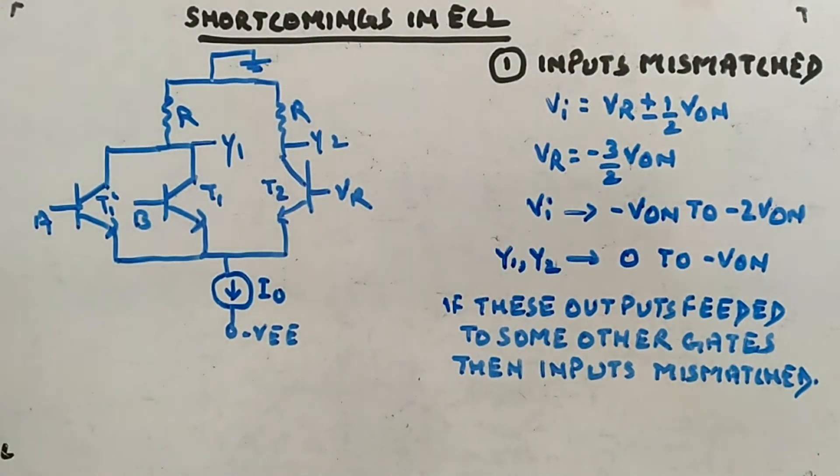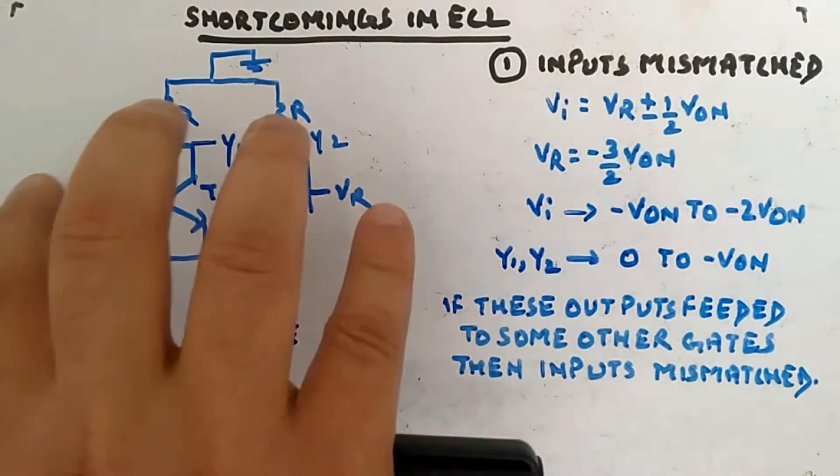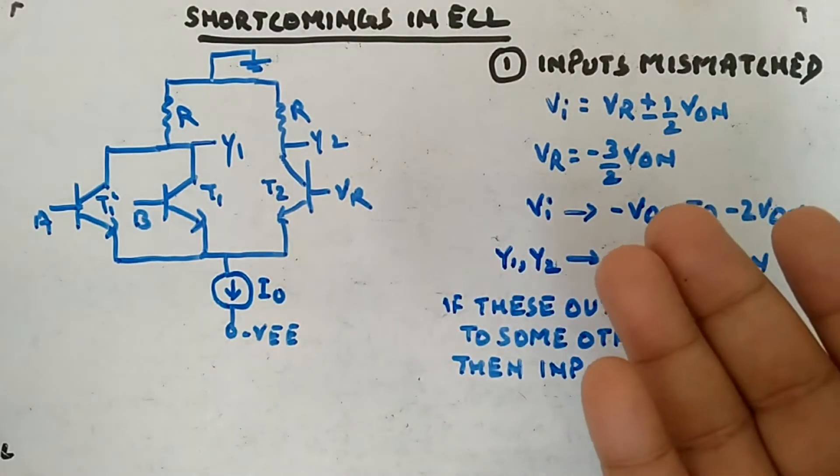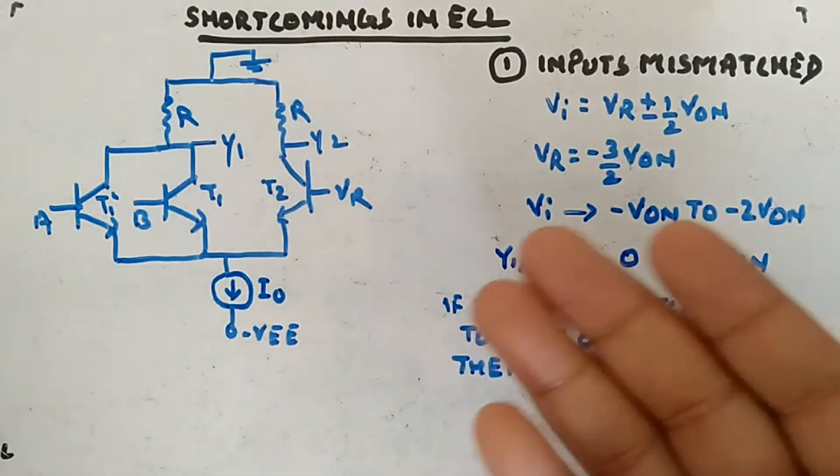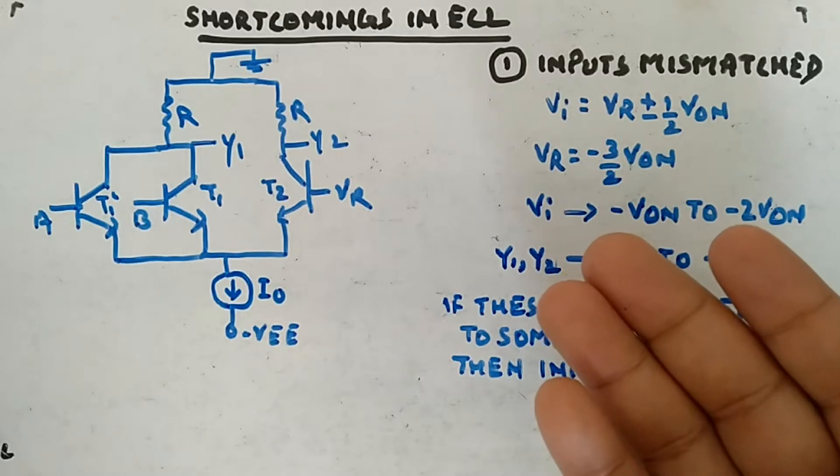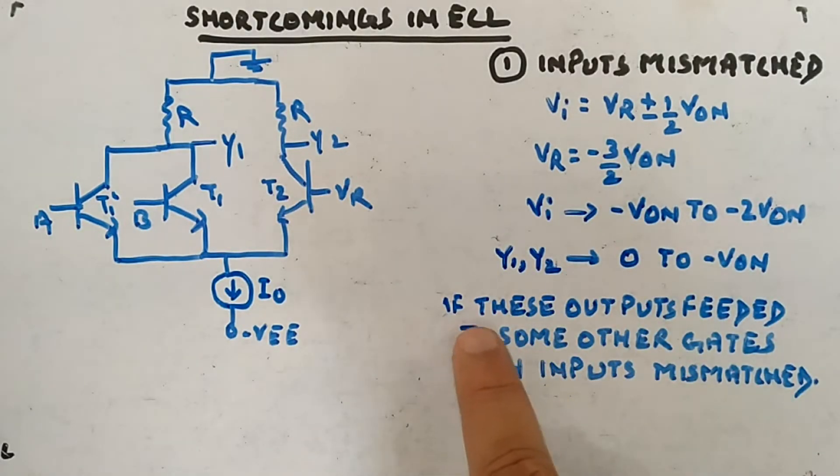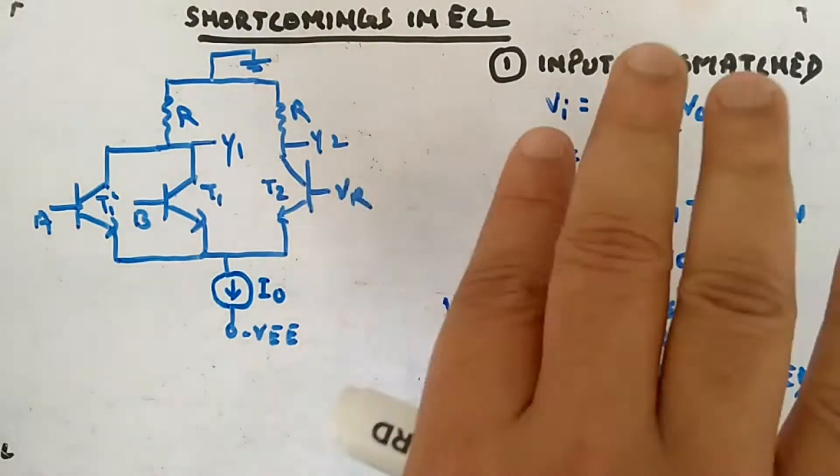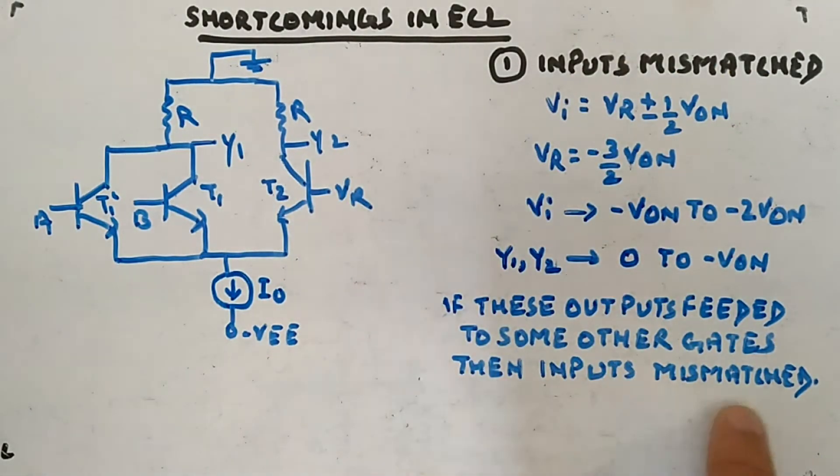So there is an input mismatch. You can't drive the other gates exactly similar to this. That's the problem which we will be able to overcome in modified ECL. If these outputs feed to some other gates or transistors, then inputs will be mismatched.